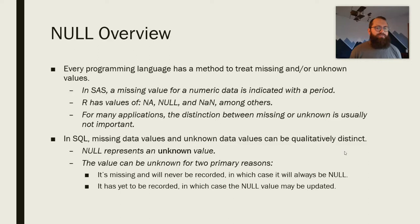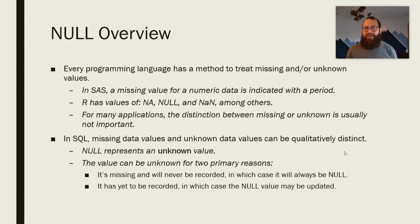R essentially has various values for data depending on why it's missing, why it's unknown, or why it can't be displayed. For many applications when you're doing data analysis, the distinction between missing or unknown is usually not that important. You've read in your data, your data is going to be your data at that point in time. You run your model or whatever you're doing, and that data is not going to change.